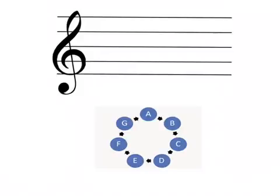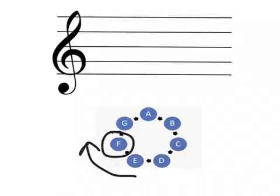The final note that we will learn how to read on the treble clef staff, following our pattern of course, is F. This time, F will sit on the very top line in the treble clef staff.